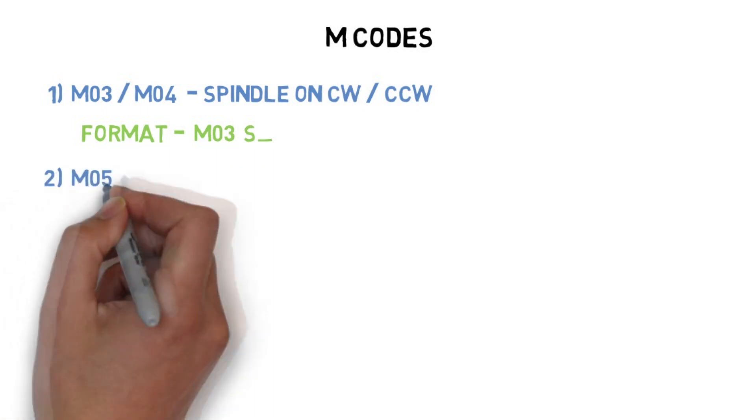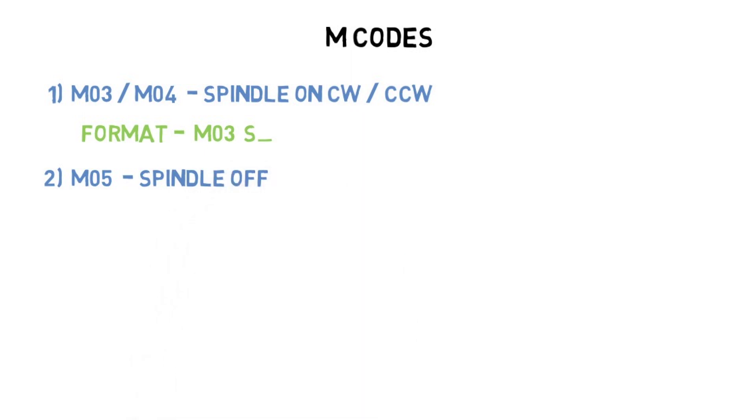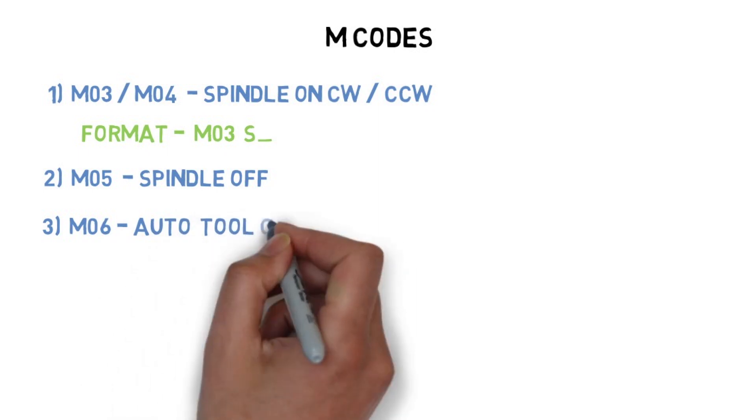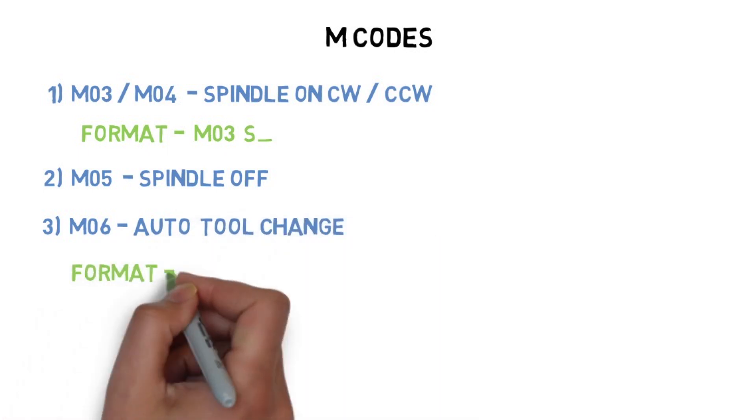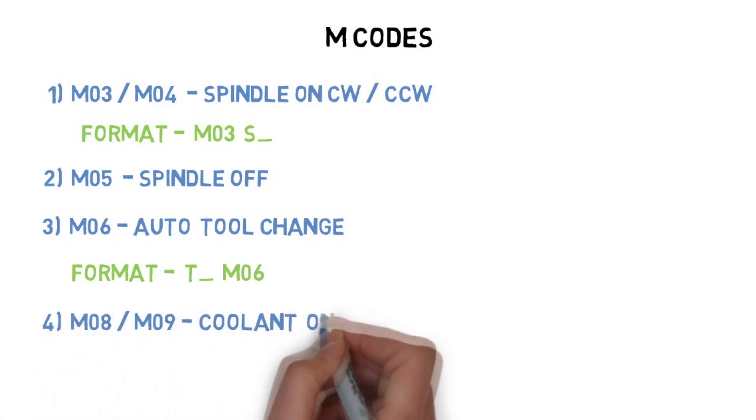Number two, M05. M05 is used for spindle stop. Number three, M06 - Auto tool change. When multiple tools are stored in the machine tool magazine, you can choose the tool number and M06 - the machine will change the specified tool to the spindle. Number four, M08 and M09 are used for coolant on and off respectively.